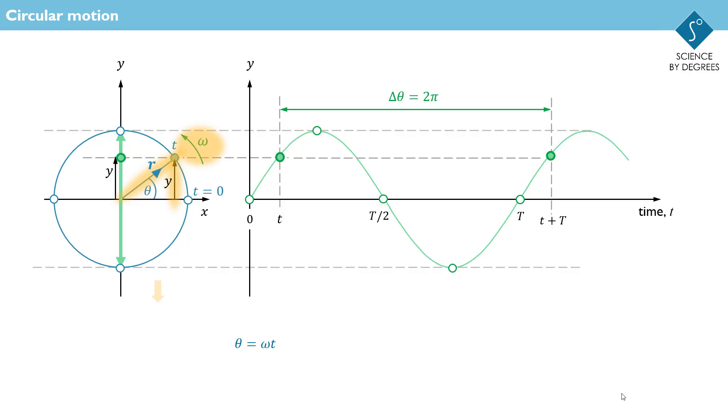In the right angle triangle shown, sin theta is equal to y over r, which is useful because we're trying to find information about y. So y equals r sin theta.